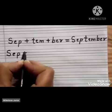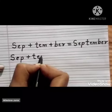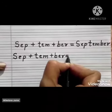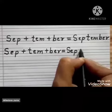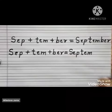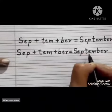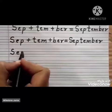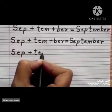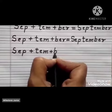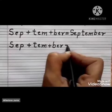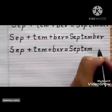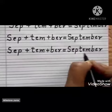S-E-P makes SEP, plus T-E-M makes TEM, plus B-E-R makes BER. Now we combine it: SEP + TEM + BER = September.